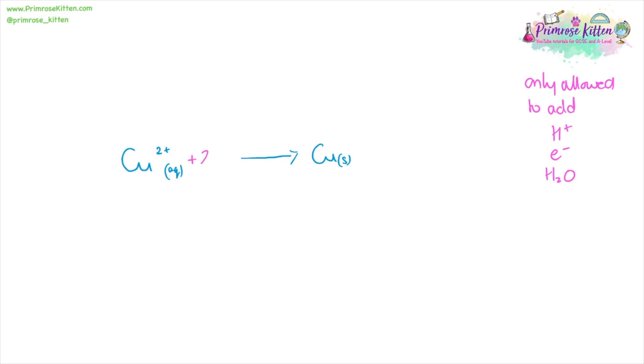Here is another one. We have a copper two plus, so to balance that out, we need to add on two electrons to match the overall zero charge on the other side. This here is a gain of electrons, meaning again it is going to be a reduction reaction.